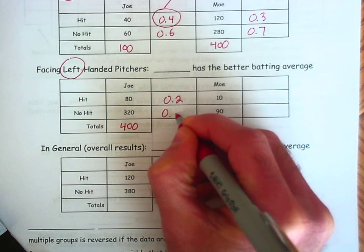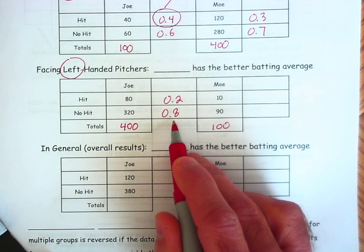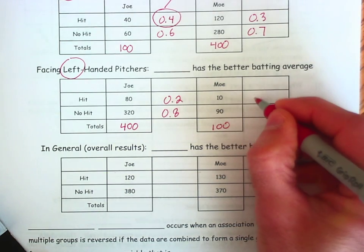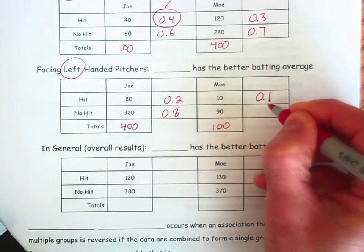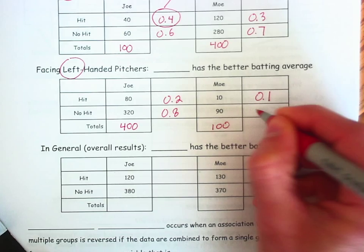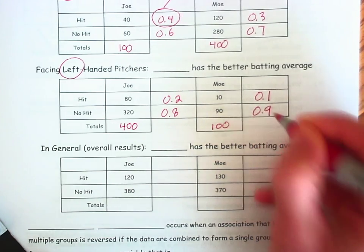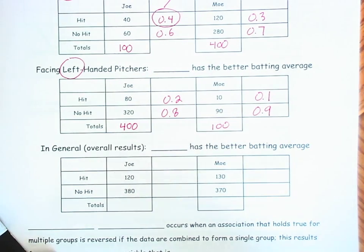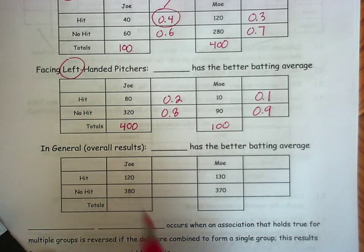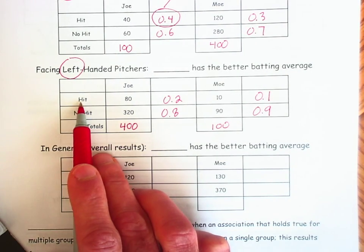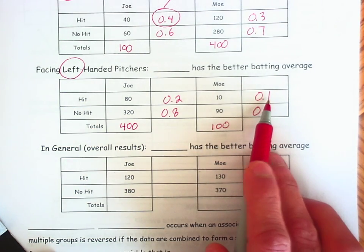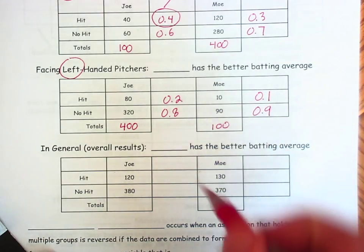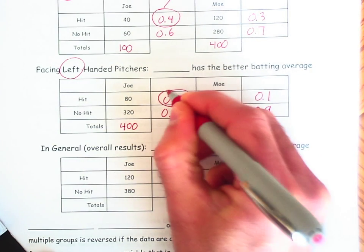So 0.8 finishes that conditional distribution. Mo's batting average is 0.1 against left-handed pitchers, and 0.9 finishes out that distribution. So notice in this case, looking at left-handed pitchers and their batting averages, once again it is Joe that has the better batting average.